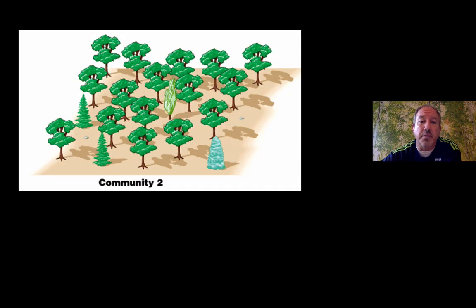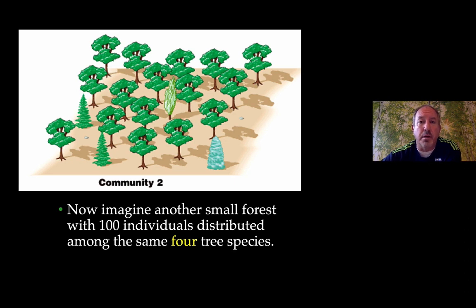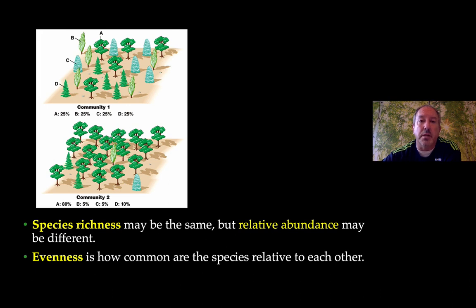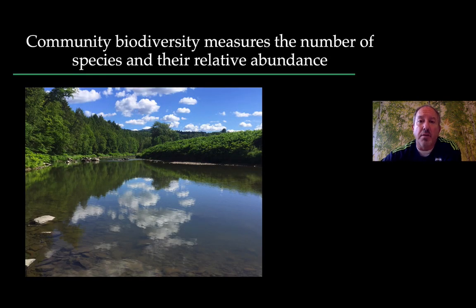Now take a look at community number two. There are also four different species, just like the first community, but it looks really different in appearance. Even though the alpha diversity is the same between community one and community two, the evenness is different. When you look at species richness, they're both four, but when you look at relative abundance, species A is kind of dominating — there's an unevenness to this particular community. Conservation biologists and ecologists measuring species in a community need to know this information.